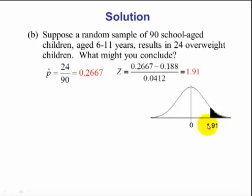If we draw a picture, 1.91, we want greater than. Using table 5, the probability of z is greater than 1.91 is 1 minus what's in the table, 0.9719, which is equal to 0.028.